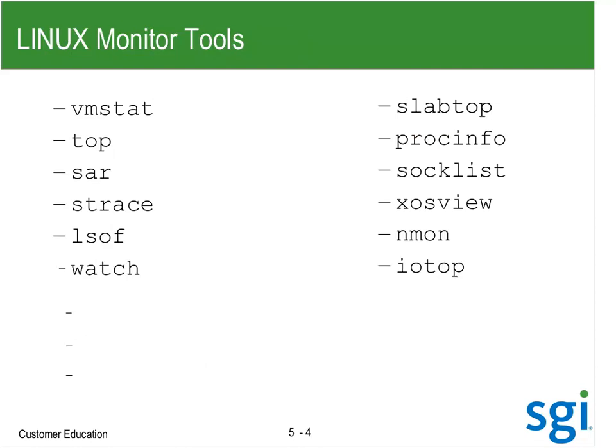Some of the basic commands: vmstat has been there a long time. It will show me user and system time, memory, and IO. The problem with vmstat is there's nothing historical — it's only on the live system. I'm going to go back through top in more detail, and we've been using the SAR command.